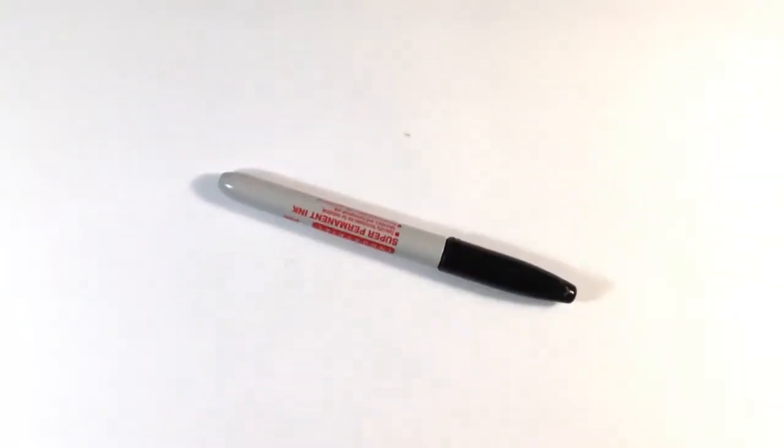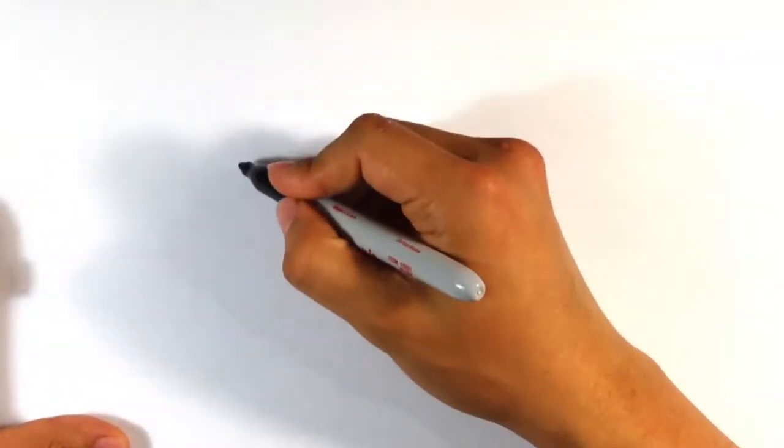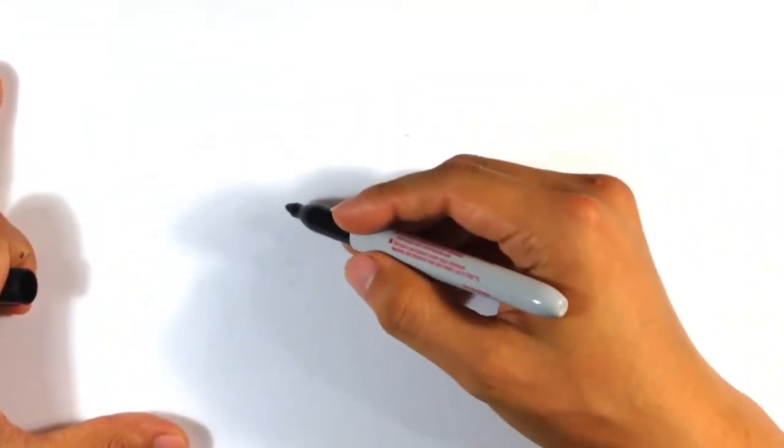I'm going to be using a Sharpie marker. We're going to be drawing a cute Halloween Beetlejuice, essentially. So let's get into it. We're using a Sharpie marker with a little bit of a point.